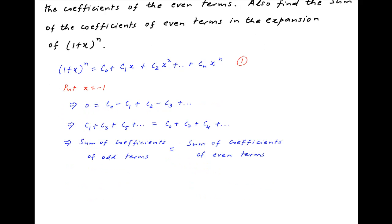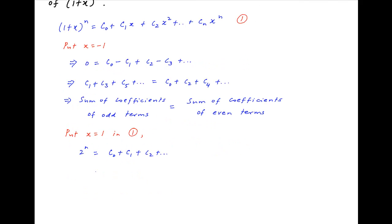Next, put x = 1 in the standard binomial expansion of (1 + x)^n. We therefore get 2^n on the left hand side, and the right hand side is equal to C0 + C1 + C2 + and so on.